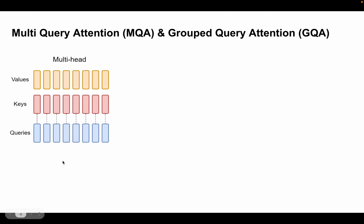In this example, multi-headed attention is shown for a given token with eight heads. That means for a given token we have generated eight queries, eight corresponding keys, and eight corresponding values. In each head, the query is multiplied with the keys, divided by the square root of d, softmax is applied, and the result is multiplied with the values. The same operation is done for all heads, and finally a weighted average of all heads gives the token representation.